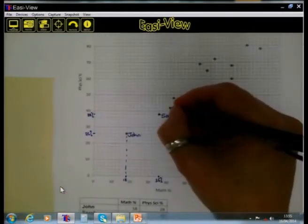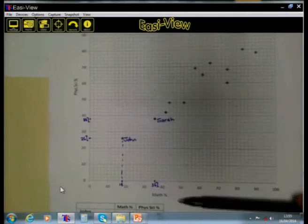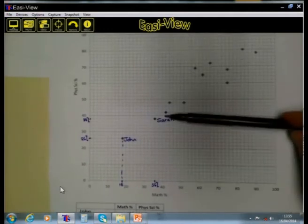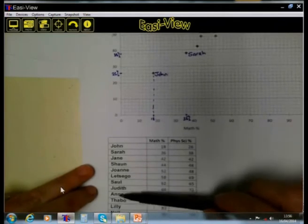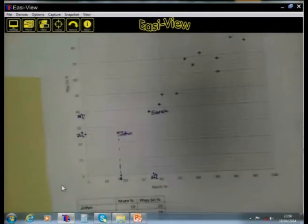And so, each one of these learners in the class can be represented by a dot, where for every one of these dots, we can read off a mark for math and we can read off a mark for physical science. You will see here are 12 learners in this data set.